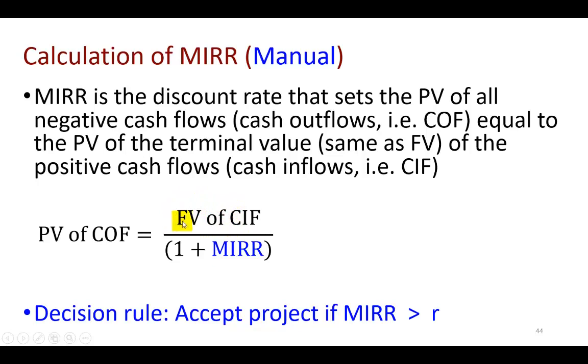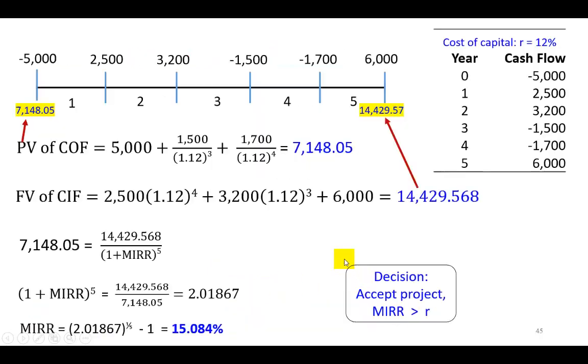When we get the future value of all those positive cash flows or the cash inflows, we're going to find what the discount rate that will set the present value of this future value equal to the present value of the negative cash flows. And if the calculated rate, which is the MIRR, exceeds the cost of capital, we select the project. I know you're saying, that was a mouthful, but here's an example which should drive it home.